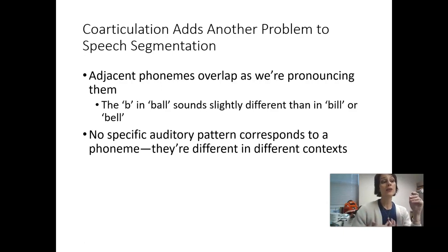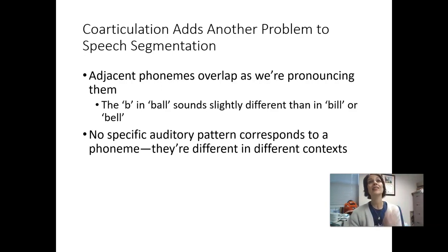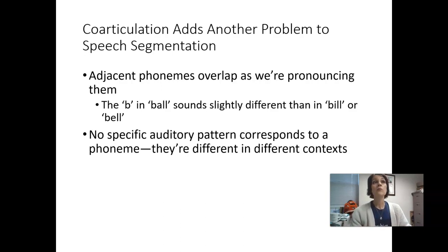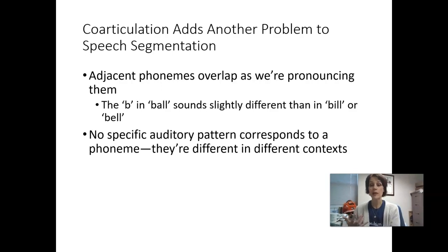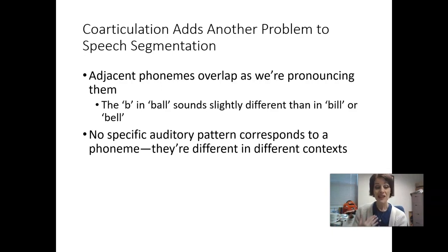While speech happens very quickly, your mouth, jaw, and the different facial features you need to modify your vocal tract move a bit more slowly. Your vocal tract is basically getting ready — as soon as you've pronounced a phoneme, you are already in preparation for pronouncing the next one, and your vocal tract is already beginning to change shape to make adjustments for that next phoneme.